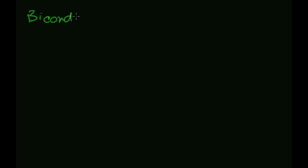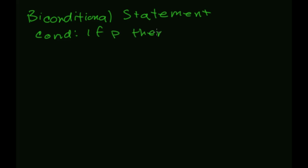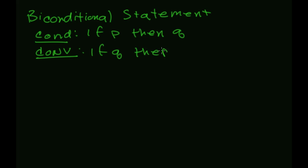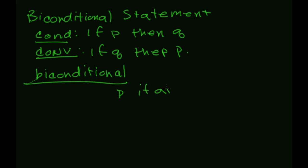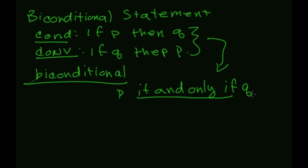You have to prove both independently. But if you're lucky enough that both are true, you get what is called a biconditional statement. If the conditional 'if p then q' is true and the converse 'if q then p' is also true, then the biconditional is true as well. We write it as 'p if and only if q.' This combines both sentences into a single statement.